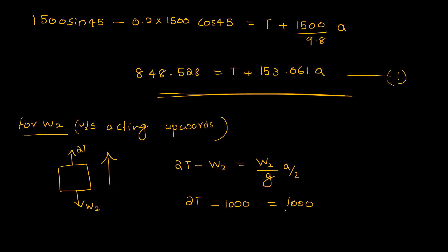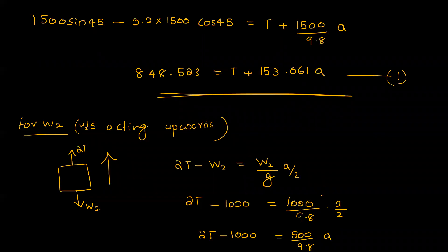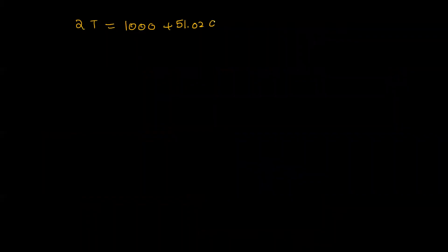So: 2T minus 1000 equals (1000 divided by 9.8) into (a divided by 2), which gives 2T minus 1000 equals 51.02 a. This is the second equation.